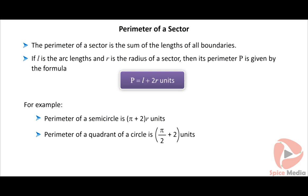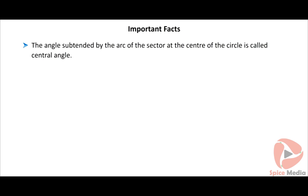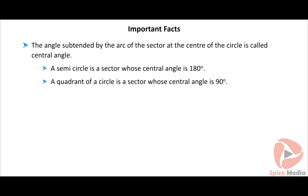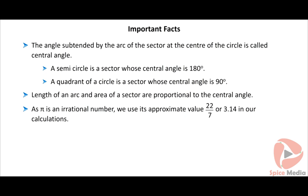Important facts: the angle subtended by the arc of the sector at the center is called the central angle. A semicircle is a sector whose central angle is 180 degrees. A quadrant of a circle is a sector whose central angle is 90 degrees. The length of an arc and the area of a sector are proportional to the central angle. As π is an irrational number, we use its approximate value 22/7 or 3.14 in calculations.